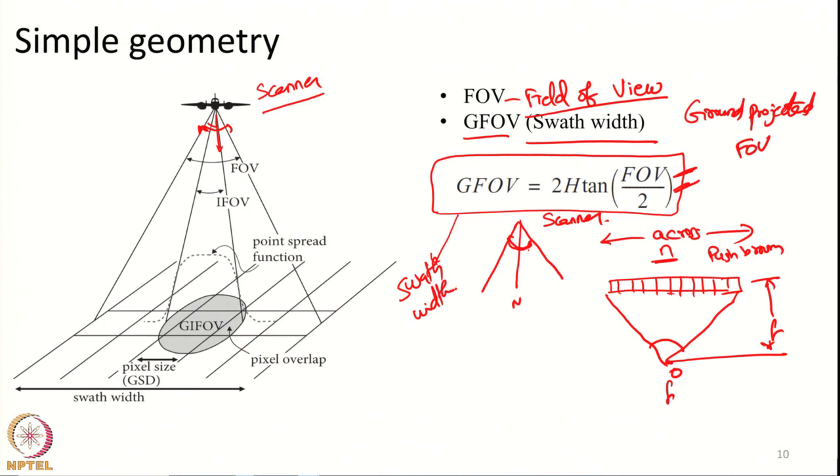As a summary, today we have seen how data will be collected by satellites in geostationary orbit. We also got introduced to 4 important terms: IFOV and GIFOV, which relate to a single detector element, and FOV and ground projected FOV — also known as swath width. With this we end this particular lecture. In the next lecture we will try to explain what is meant by spatial resolution. Thank you very much.